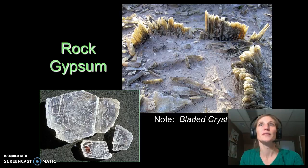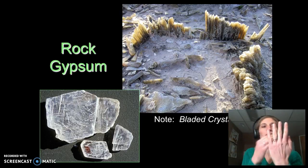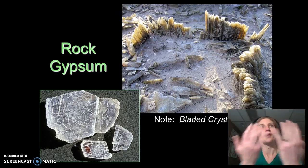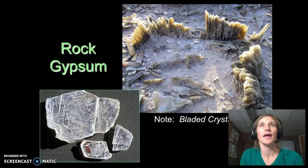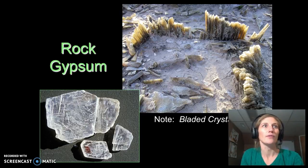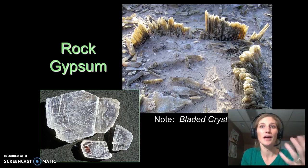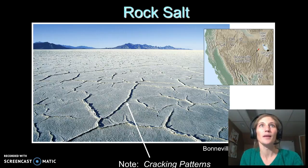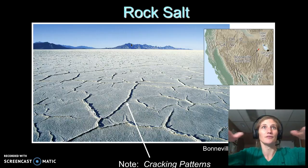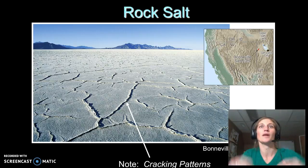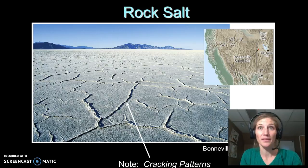Rock gypsum forms in evaporite conditions. Looking here in the desert, gypsum blades have been growing up — as the water standing in this area dried, rock gypsum started to crystallize and create bladed crystals, with clay minerals left behind in the flat pans between them. Rock gypsum, just like the gypsum in your kit, is very soft — you can scratch it with your fingernail. Rock salt is another evaporite chemical rock — this is your halite. Water flowing off mountains accumulates in flat playas, evaporates, and leaves salts behind that crystallize into halite.